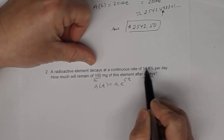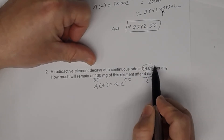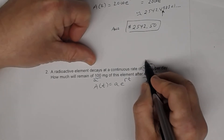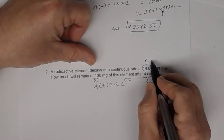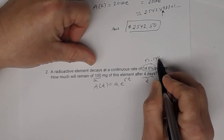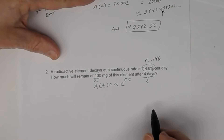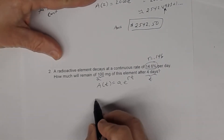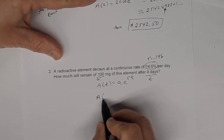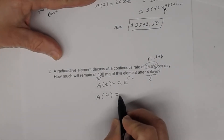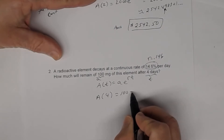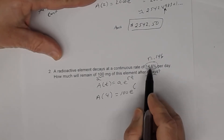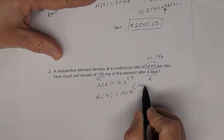We need to convert 14.6% to a decimal: 0.146. Don't forget to do that. So the amount after four days equals 100 milligrams times e raised to 0.146 times 4.